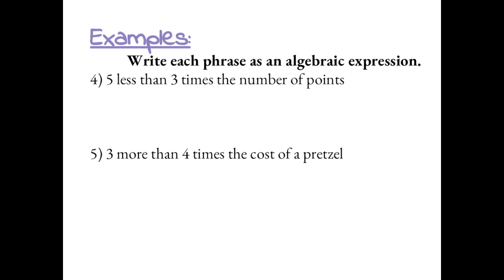Number 4, 5 less than 3 times the number of points. So the number of points is what's unknown, so I'm going to define it with the variable P. We want 3 times the number of points, so that part can be written as 3P.